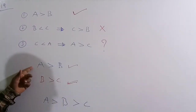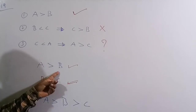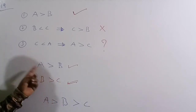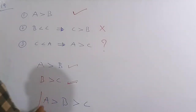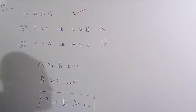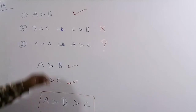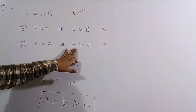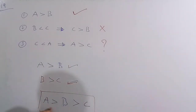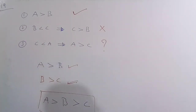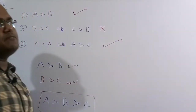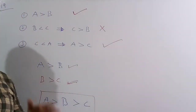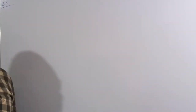From A > B and B > C, we can conclude A > C, which is exactly what Statement 3 says. Therefore Statement 3 is always correct. Option A is the answer.